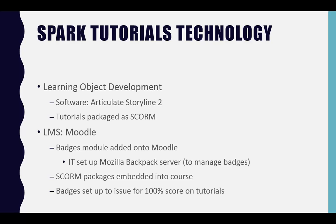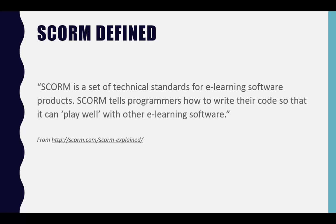The SPARK tutorials are set up as a single course — kind of like Biology 101 has its own course. This is the SPARK tutorials course in Moodle, and each tutorial is a SCORM package embedded into the course, so it talks to the grade book. The digital badges are set up to issue for a 100% score on the tutorials, with a meta badge for completing all four. SCORM is just a set of technical standards that makes everything play nice. When you package a tutorial as SCORM and embed it into a course, any score a student gets on a quiz will be communicated to the Learning Management System grade book. The tutorials are self-contained, but anything students do in them is communicated to the LMS, and the LMS handles the badge issuance.